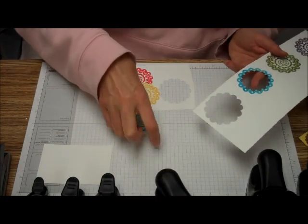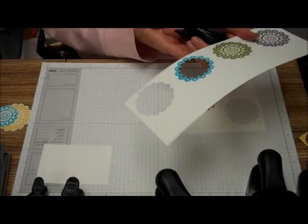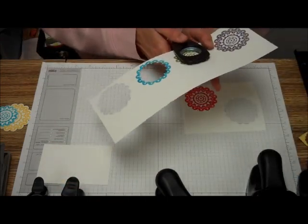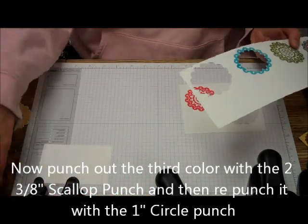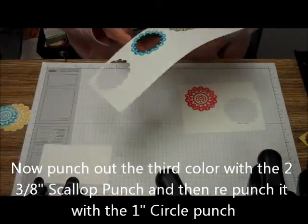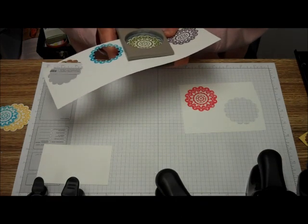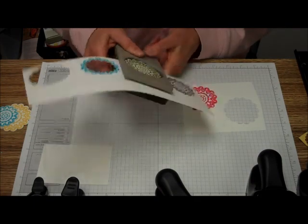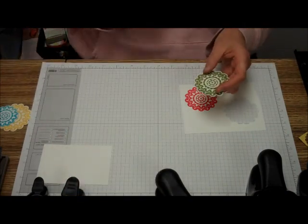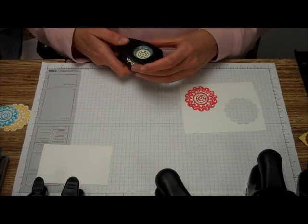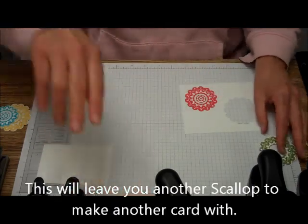Then we're going to do something a little bit different here. Because the 1-inch sometimes doesn't get right to the 1 inch, for the next three flowers we're going to punch them out with the 2-3/8 inch punch.